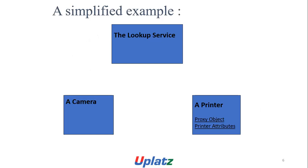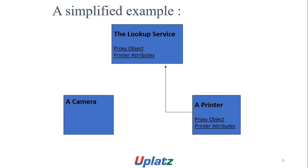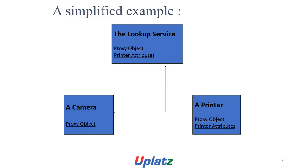A simplified example: a lookup service holds a camera and printer. There is a proxy object and printer attribute. The proxy object and the attribute register with the lookup service — a printer and a camera with the processor. Proxy of the printer.